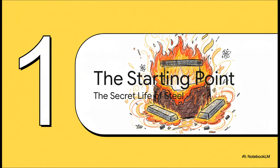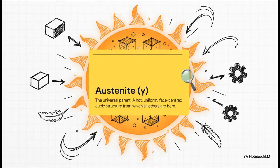Our journey has to begin not at room temperature, but in the intense heat of a furnace. When you heat steel up way past about 900 degrees Celsius, all of that complexity just melts away into one single uniform state. This starting point has a name: it's called austenite. Think of it as the universal parent phase — the hot primordial soup from which every other structure in steel is eventually born. It's just a simple, orderly crystal of iron with carbon atoms dissolved neatly inside — a blank canvas, ready to be painted.